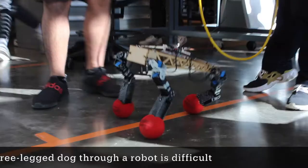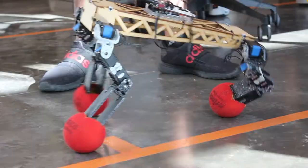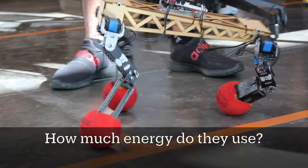So our research question was twofold. First, can we determine the amount of energy a three-legged dog expends based on their gait? And second, is this the most optimal usage of their energy?